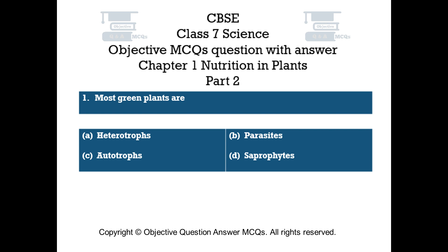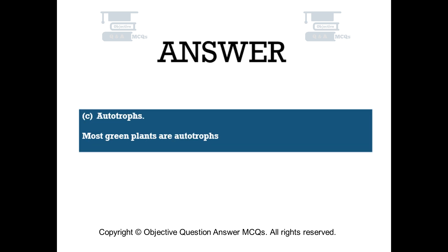Question number 1: Most green plants are. Option A: heterotrophs. Option B: parasites. Option C: autotrophs. Option D: saprophytes. The right answer is option C — autotrophs. Most green plants are autotrophs.